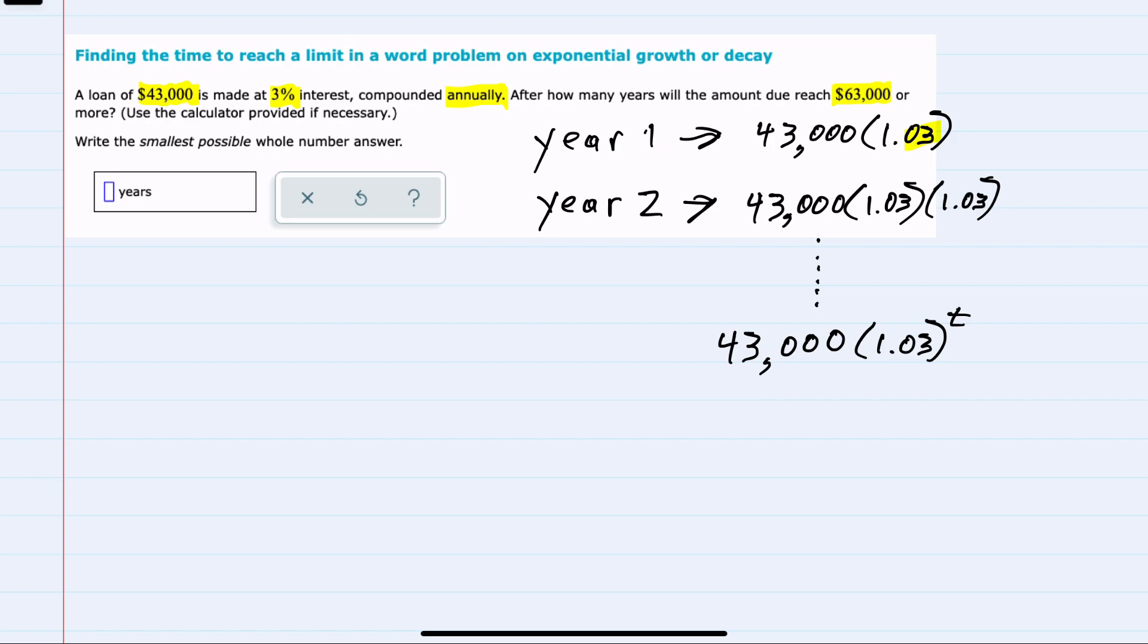And we want to know when this amount becomes greater than or equal to $63,000. And since we have this inequality, instead of doing a calculation where we take the logarithms of each side, my approach here is just going to be to do a little guessing and checking.